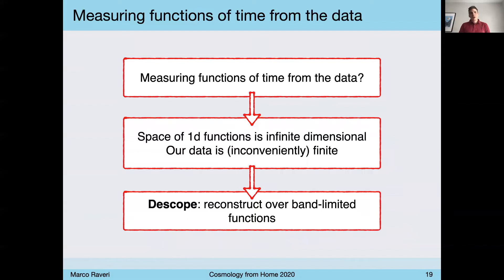We have the problem that we want to measure functions of time directly from the data in this case. And you immediately realize that the space of one dimensional function is infinite dimensional, while our data is always going to be very inconveniently finite dimensional. So there can't be any correspondence, one to one correspondence between the two.